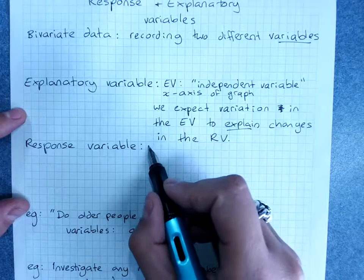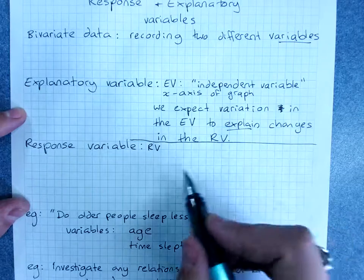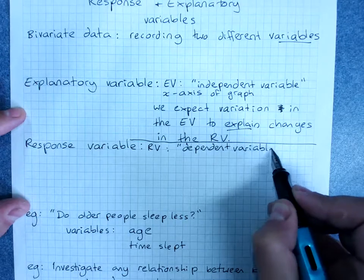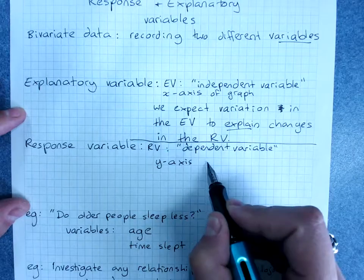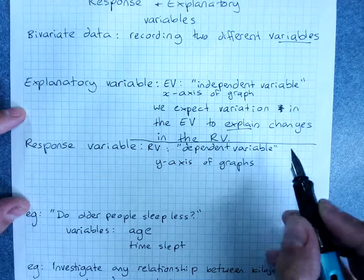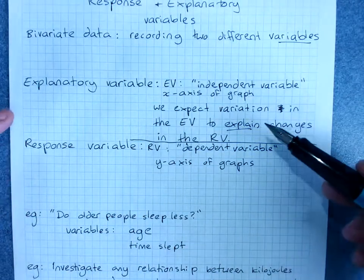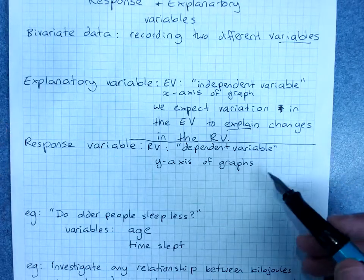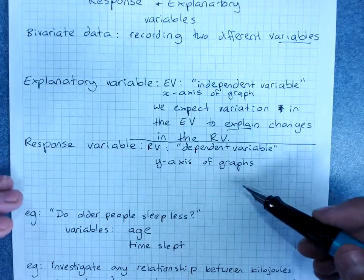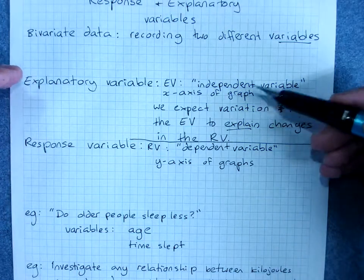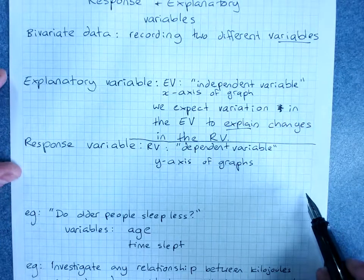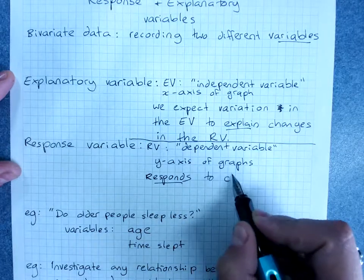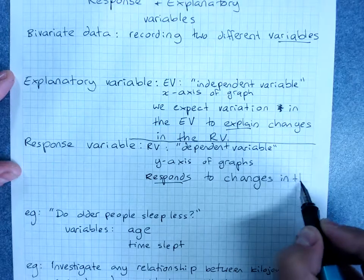The response variable, or RV, is what we used to call the dependent variable. It goes on the y-axis of graphs, and changes in the response variable can be explained by what was happening in the explanatory variable. This one responds to changes in the explanatory variable.